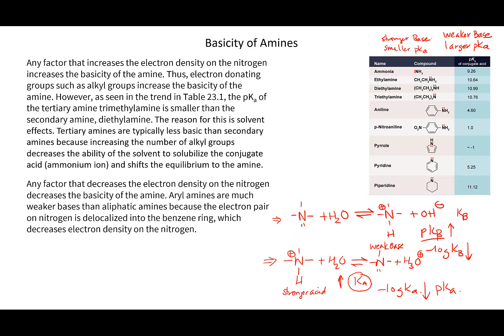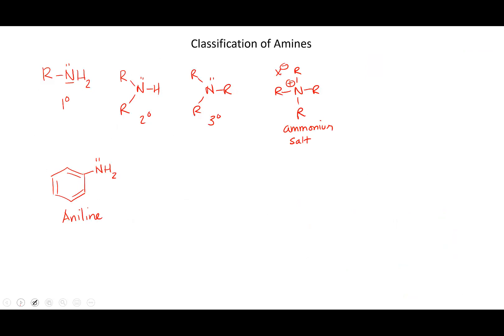I should have just given this chart as Kb values, but we'll go with what the book has. Looking at this chart, let's start with the difference between primary and tertiary amines and what the trend is. I've cut the paragraphs from the textbook and we'll unpack them.